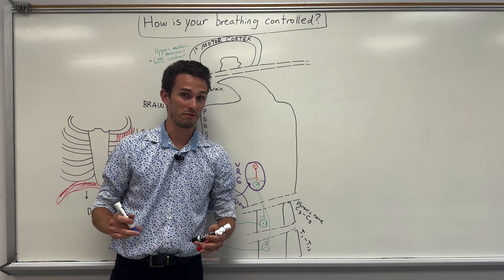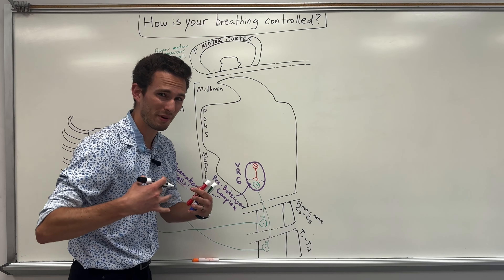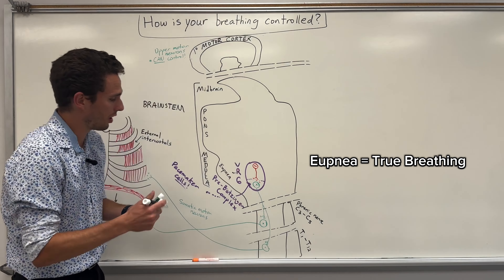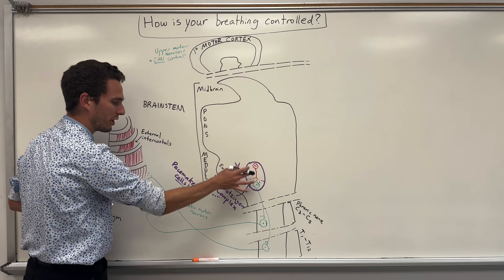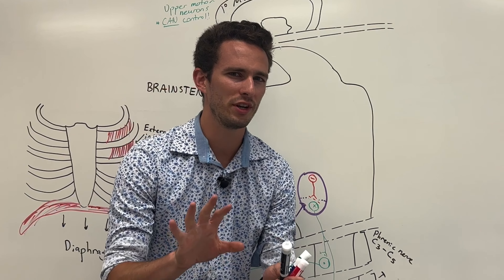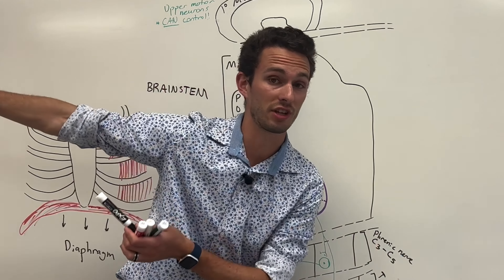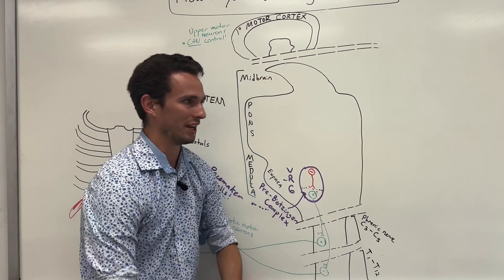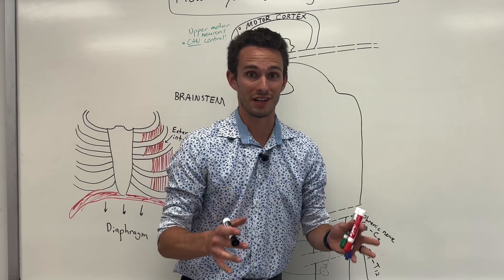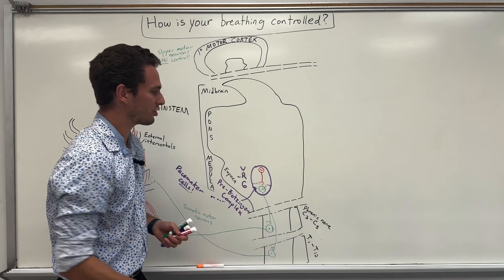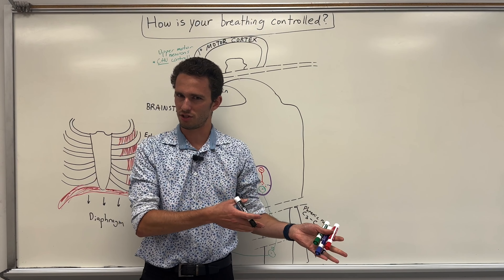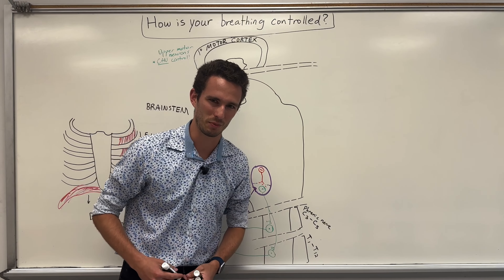The VRG is probably the most important section of your brainstem to help you breathe automatically without thinking about it. But the problem comes when you're under different circumstances — sometimes you're exercising and you want to increase your respiratory rate, or there are other ways your respiratory rate can be controlled in different environments. So we need a lot of other players involved in this process.